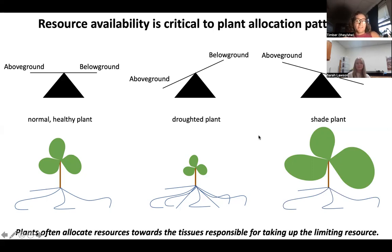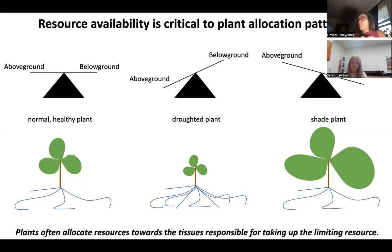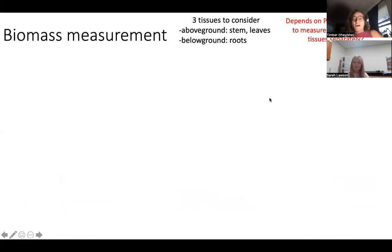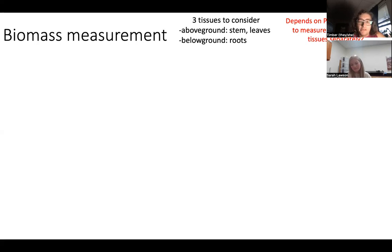At its core, plants allocate resources toward the tissues responsible for taking up the limiting resource. If droughted, they allocate toward roots to take up water; if light is limited, they allocate toward leaves to capture more light. We can study this balance using the root-to-shoot ratio. For most projects, we'll do a simple biomass measurement considering three tissues: above-ground tissues — the stem and leaves — and below-ground tissues — the roots.